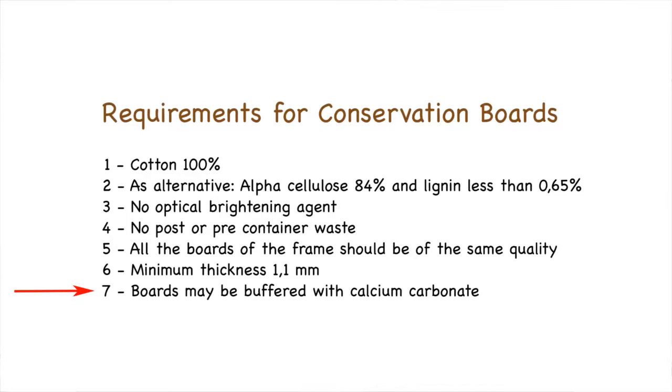Boards may be buffered. Buffering with calcium carbonate increases the alkalinity of the boards — normally boards that have been buffered have an alkalinity of around 7.5 to 9.5 on the pH scale. In addition, some manufacturers add an alkaline reserve of between 2% and 5%, again using calcium carbonate. The effect is that it increases the longevity of the board and neutralizes free acids with a pH value of less than 7. Because of the slightly acidic nature of some darkroom-developed photographs, buffered board is not ideal in these cases.